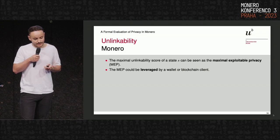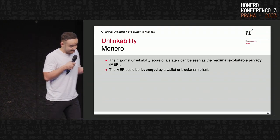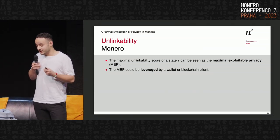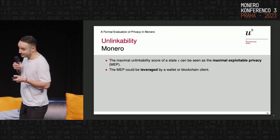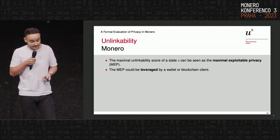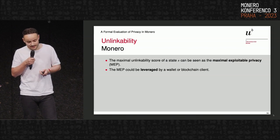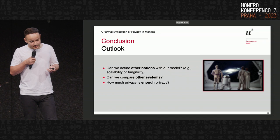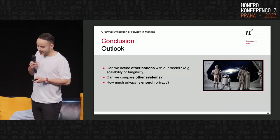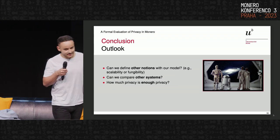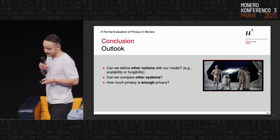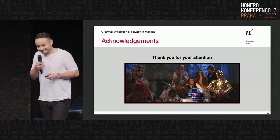I also have a lemma for the interval of the unlinkability score of CoinJoin. The maximal unlinkability score can be leveraged — we see that CoinJoin can exploit it, and I think it can be called the maximal exploitable privacy, which could be leveraged by a wallet or blockchain client to counteract any heuristic. In conclusion: can we define all privacy notions with our model? Can we compare all systems? I believe so. And how much privacy is enough — that k we saw — we think P may be enough at some point.